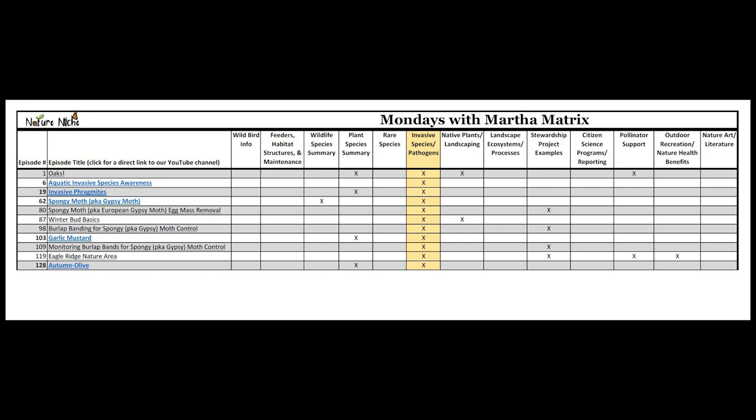The sixth category covers invasive species and pathogens. I talk about oak wilt, how to prevent the spread of aquatic invasive species, things like phragmites, spongy moth, garlic mustard, and autumn olive. I cover how you identify these species, how they disrupt or cause harm to our ecosystems, and how you can control them in your own landscapes.